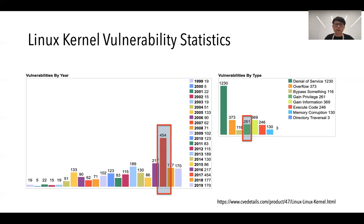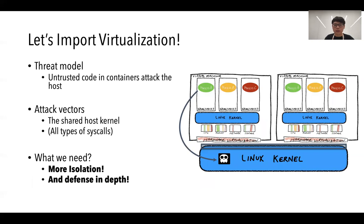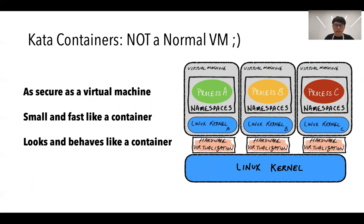So how do we handle these security issues? We are thinking about adding another level of indirection by importing virtualization. By adding processes into a virtual machine, we can have more isolation and defense in depth. Here comes our leading actor today: Kata containers. It is not a normal VM — it tries to combine the best of containerization and virtualization. Kata targets to be as secure as a virtual machine and to be small and fast like a container.